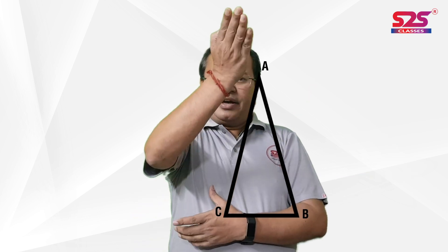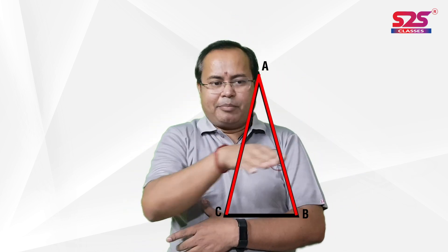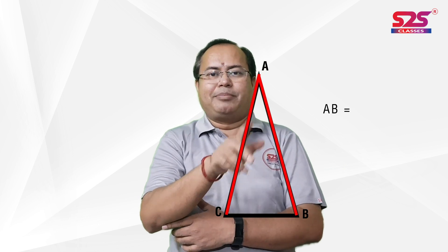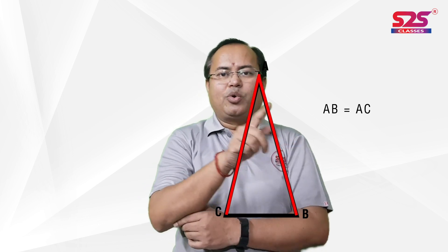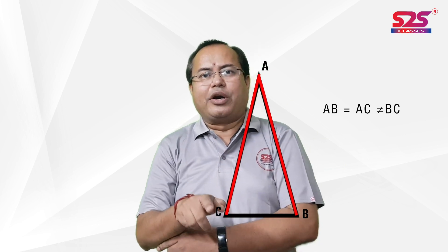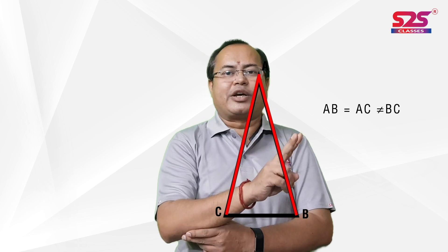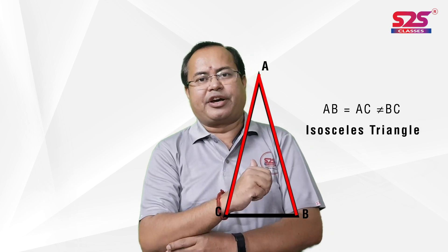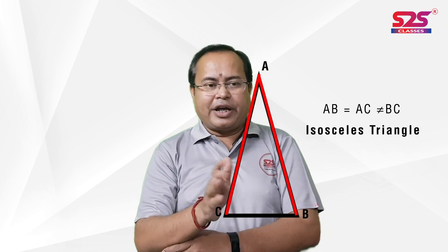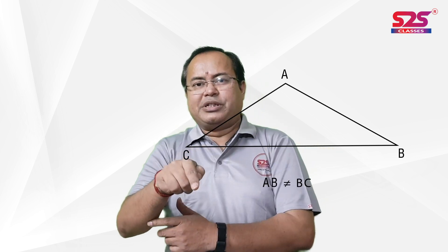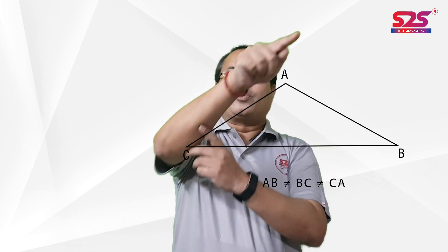Second case: here AB is equal to AC, but it is not equal to BC. It means AB equals AC but not equal to BC. Here two sides are equal, so it is an isosceles triangle.